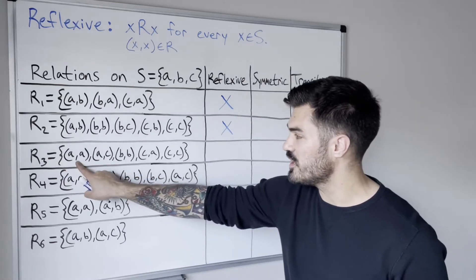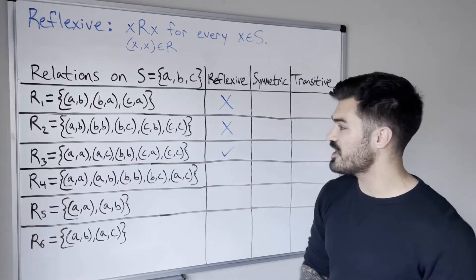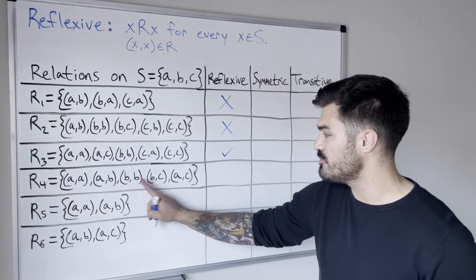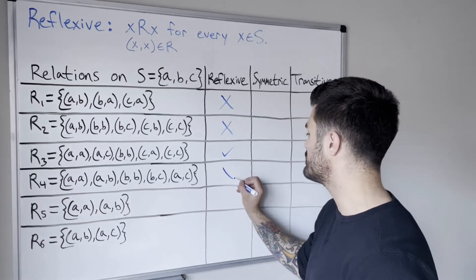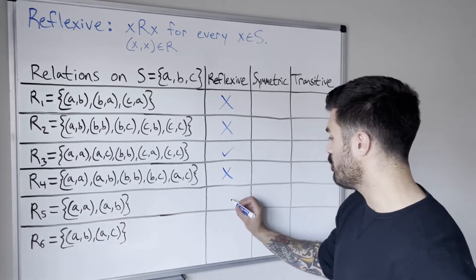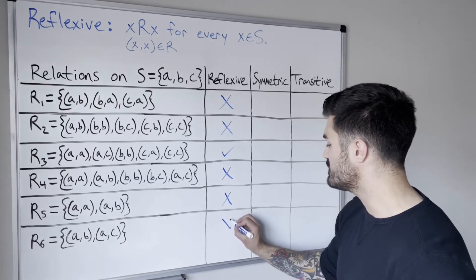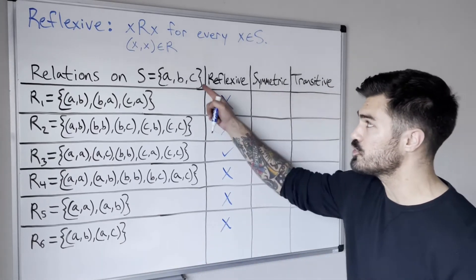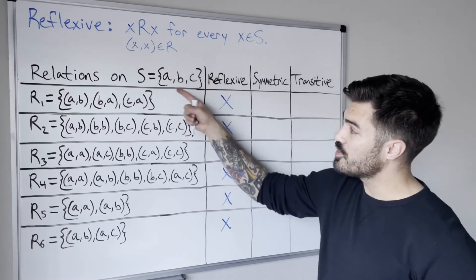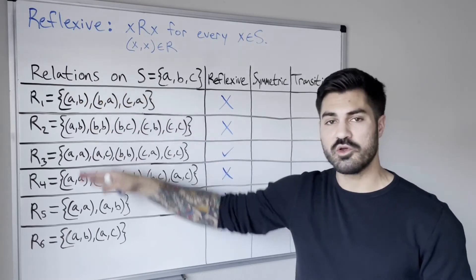Relation four has (A,A) and (B,B) but not (C,C), so not reflexive. Relation five has (A,A) but not (B,B) or (C,C), so not reflexive. Relation six has none of them, so not reflexive. So first we look at the set, check all the elements, and verify whether each element is related to itself — only relation three passes.